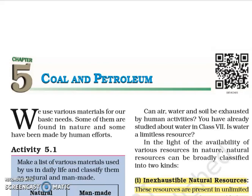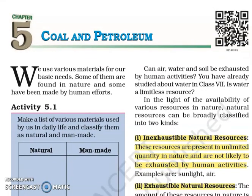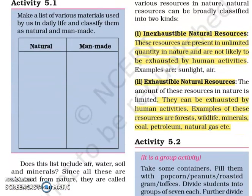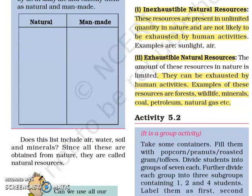We use various materials for our basic needs. Some of them are found in nature and some have been made by human efforts. Activity 5.1: Make a list of various materials used by us in daily life and classify them as natural and man-made. The various materials we use, you can classify them in two types: natural and man-made.